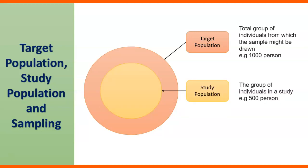Number two is study population. The study population is the group of individuals in a study. For example, you have selected 500 persons from the target population and you would like to conduct some research and get some information.